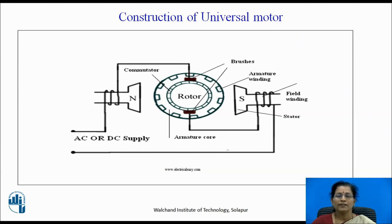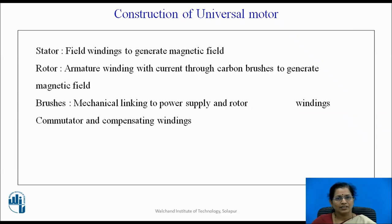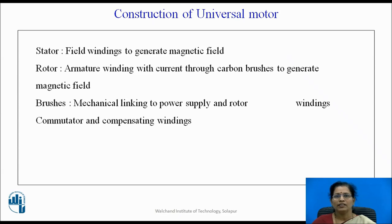The brushes are there to provide the supply connection to the armature winding. The stator has the field winding to generate the magnetic field; the rotor armature winding carries current through carbon brushes to generate the magnetic field. The brushes provide mechanical linking to power supply and rotor windings, along with the commutator and compensating winding.